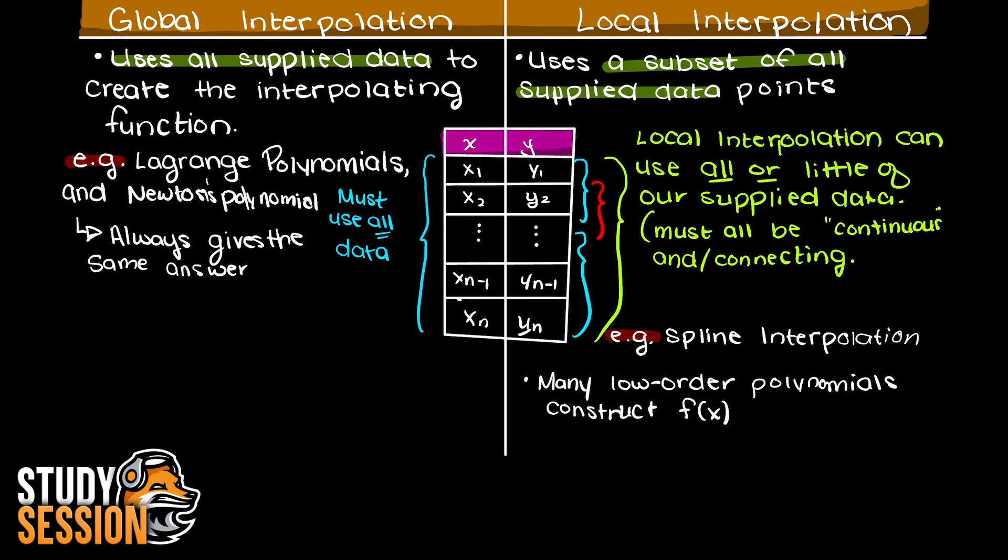Whereas a local interpolation method can use pretty much any subset of this data we choose. For example, we could use any of these subsets to find a local interpolating polynomial. That should give us a good output approximation for any input in the range that we find our polynomial's fit for.